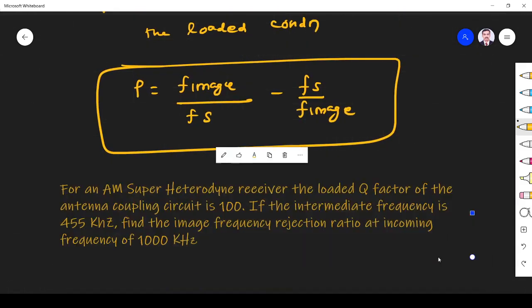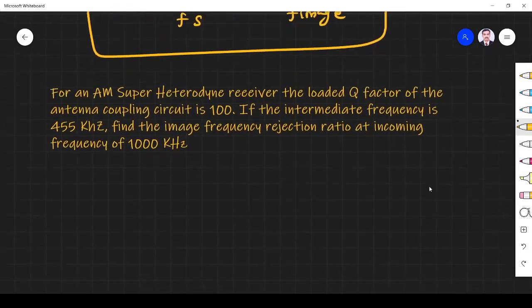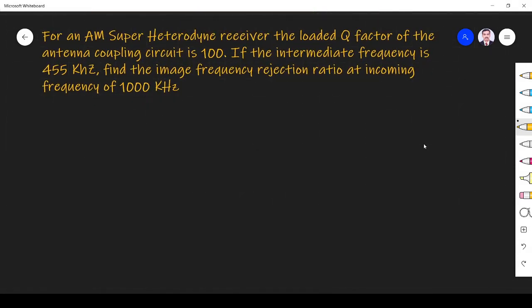Next we see one problem from this area. For an AM superheterodyne receiver, the loaded Q factor of the antenna coupling circuit is 100.